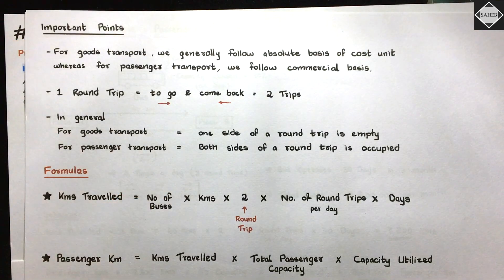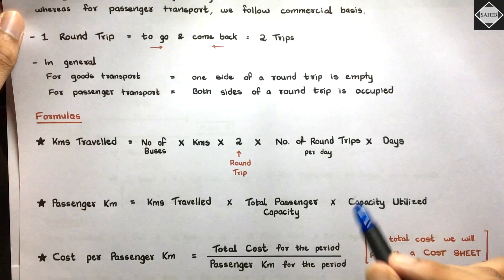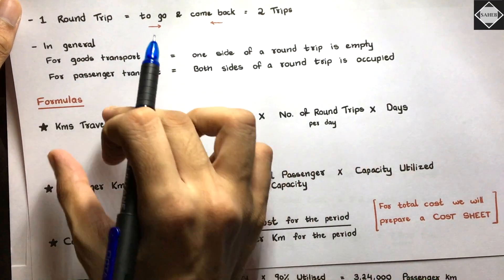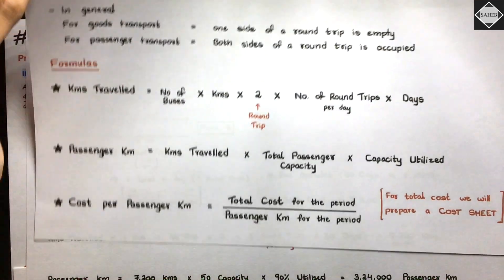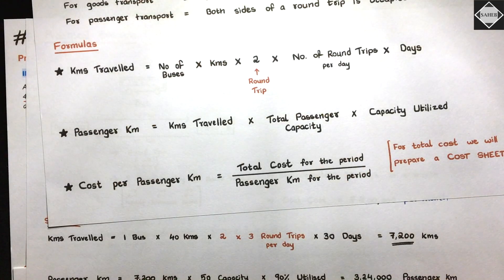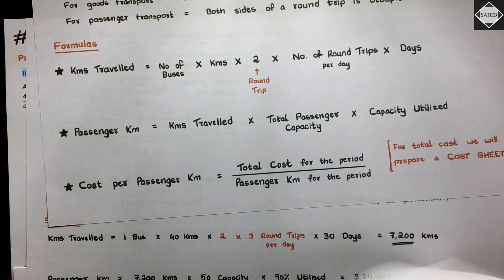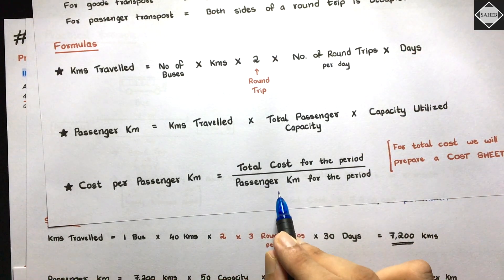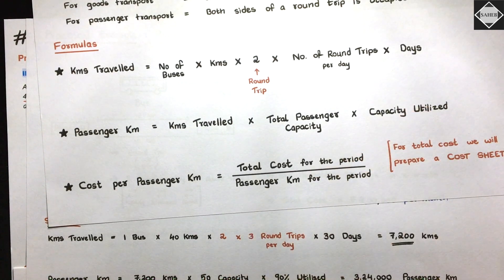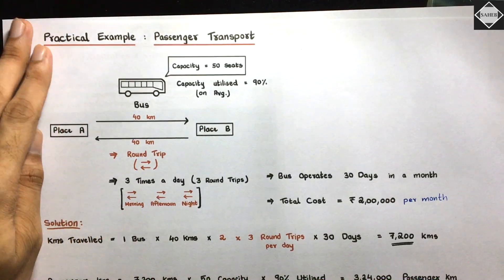After the operating cost sheet format, we discussed important points regarding the transportation industry and the formulas. First, calculate the kilometers traveled, then apply the passenger element to get passenger kilometers - total passenger capacity multiplied by capacity utilized. Cost per passenger kilometer equals total cost for the period divided by total passenger kilometers for the same period. The numerator and denominator must be on the same time level - monthly or annual. That was the recap of the first video.